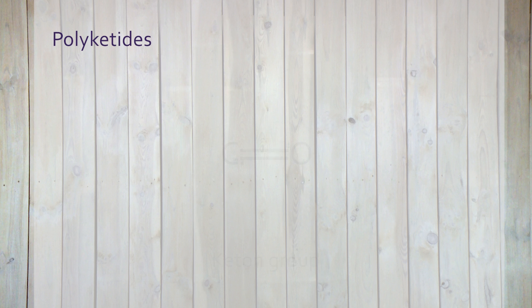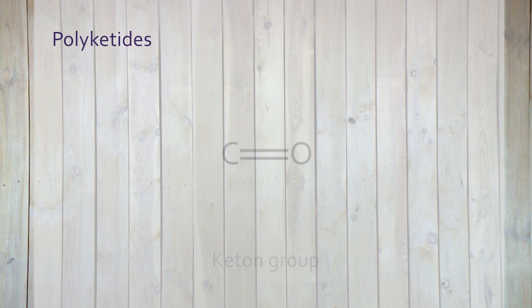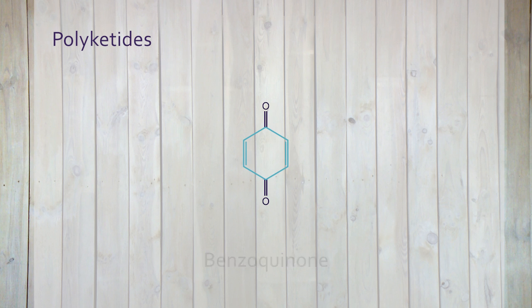The last group of natural compounds that will be discussed is the group of polyketides. As the name implies, these compounds have many ketone groups. One of the simplest are the quinones, such as benzoquinone, derived from benzene.